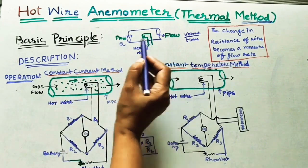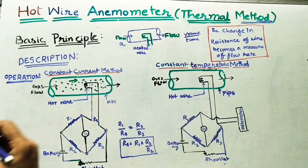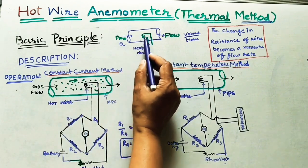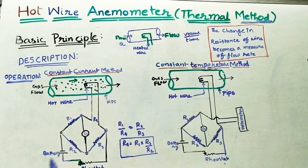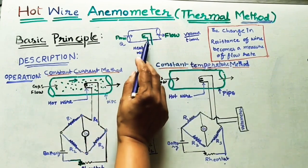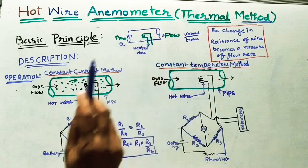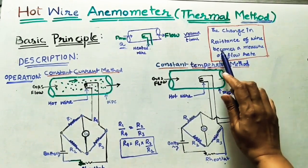Initially the wire temperature is high because of the heat we are supplying to it. During the flow, the flow temperature is less, so it will absorb heat from the filament. After absorbing the temperature, the flow gets heat and the wire gets cool — its temperature becomes less. Because of this lower temperature, the resistance of the wire will also change, since temperature and resistance depend on each other. That change in resistance will find the flow, and becomes a measure of flow rate.